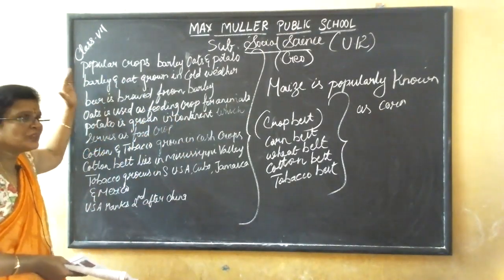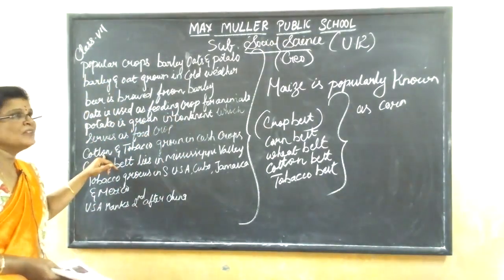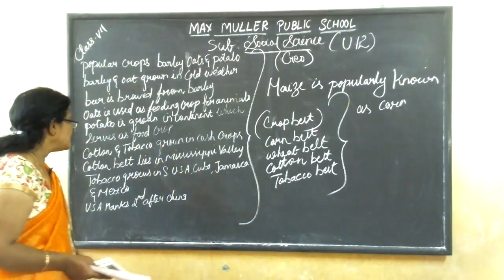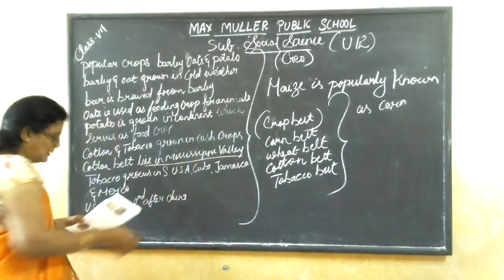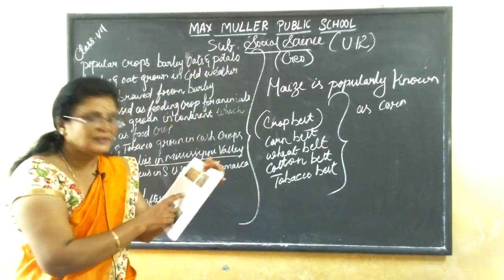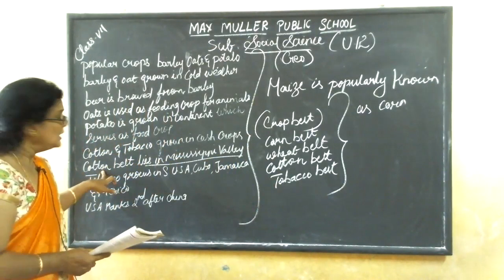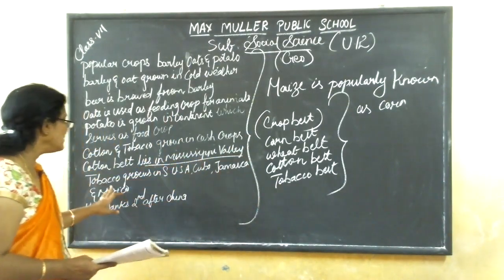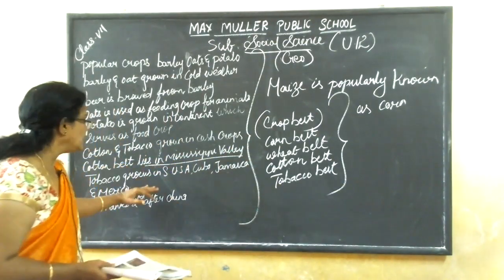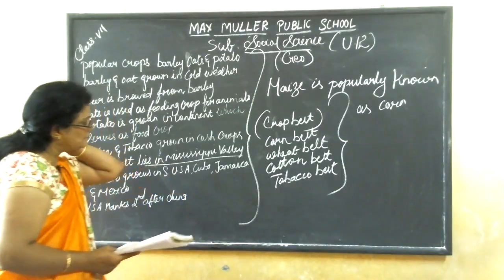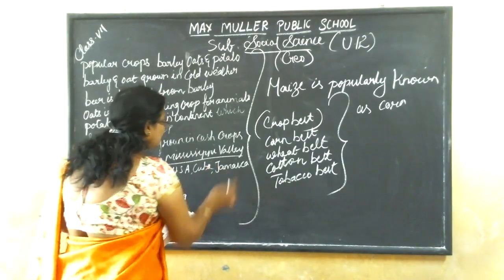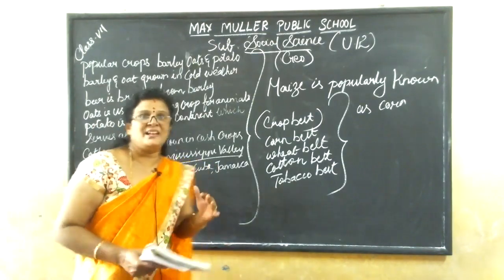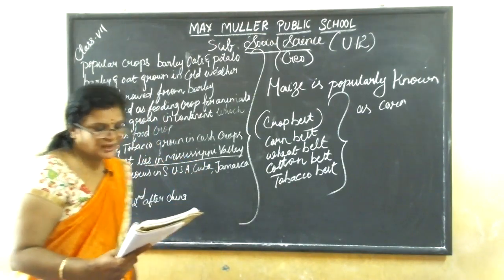Cotton and tobacco are also grown as cash crops. The cotton belt lies in the Mississippi Valley. Tobacco grows in the South USA, Cuba, Jamaica, and Mexico. The USA ranks second after China in the exporting of tobacco in the world.